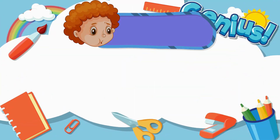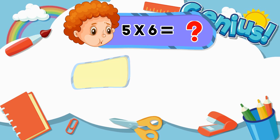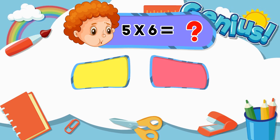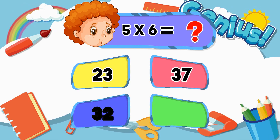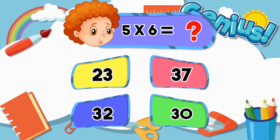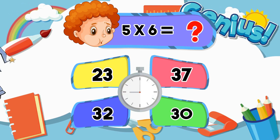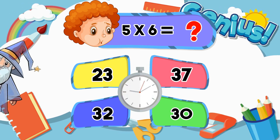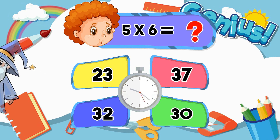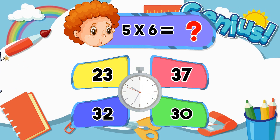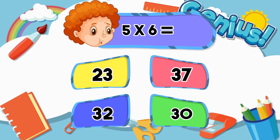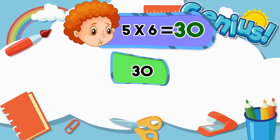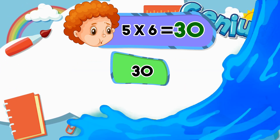What is 5 times 6? 23, 37, 30. Answer: 30.